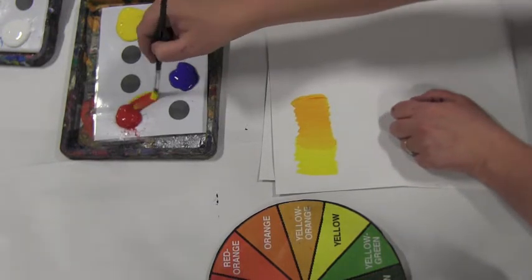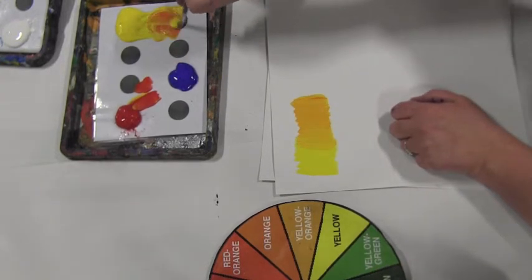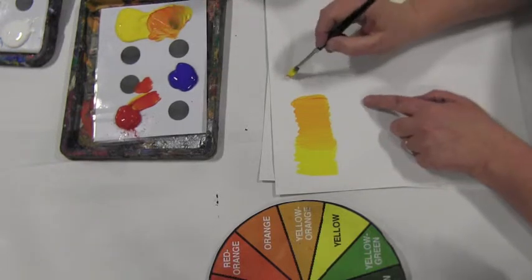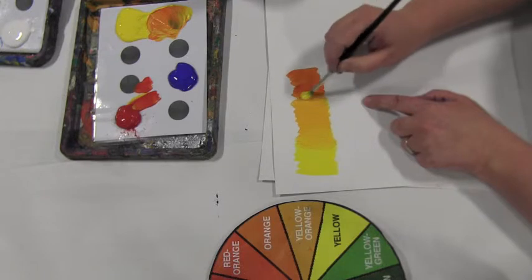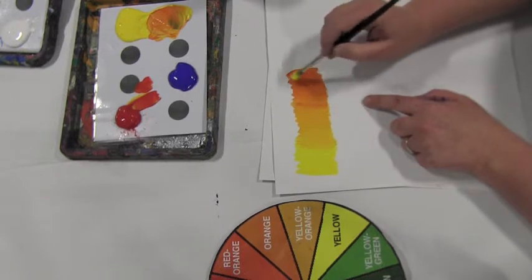And now I'll add a little bit more red into my yellow. Leave a gap, and go about halfway into the yellow. And you can see now I'm getting an orange.